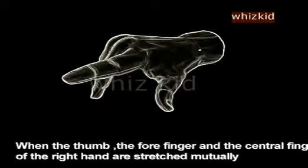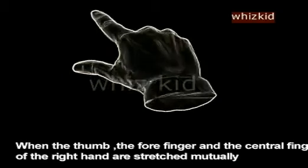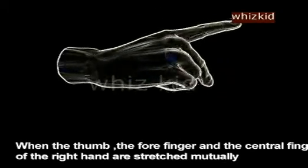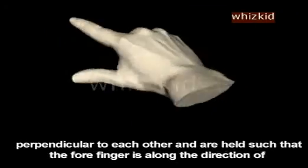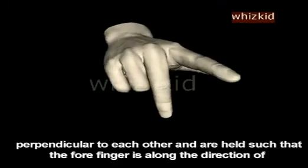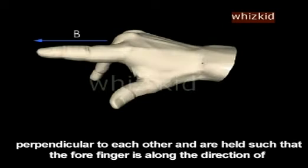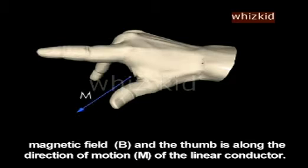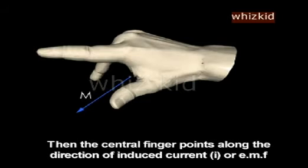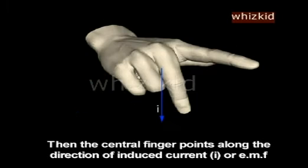Fleming's Right Hand Rule: When the thumb, forefinger, and central finger of the right hand are stretched mutually perpendicular to each other and held such that the forefinger is along the direction of magnetic field B and the thumb is along the direction of motion M of the linear conductor, then the central finger points along the direction of induced current I or electromotive force.